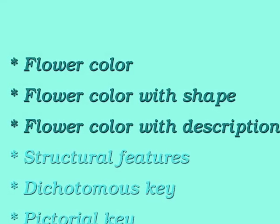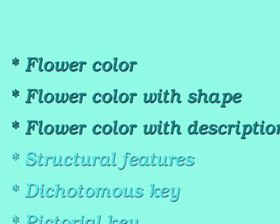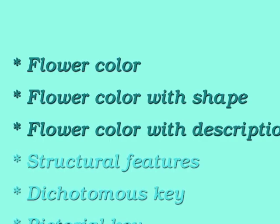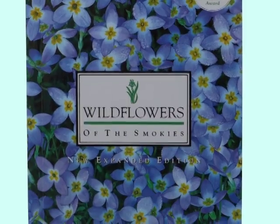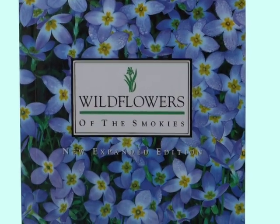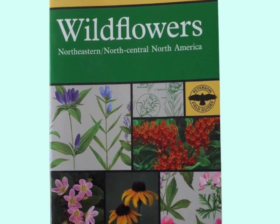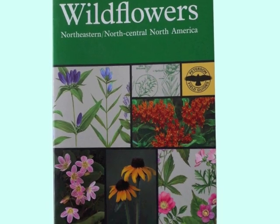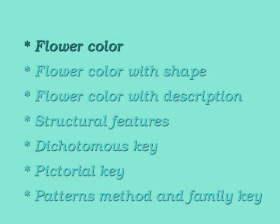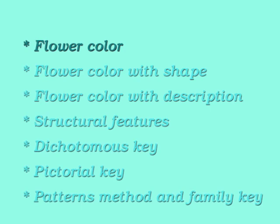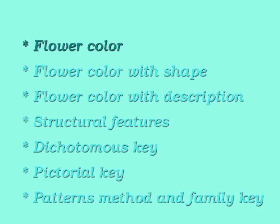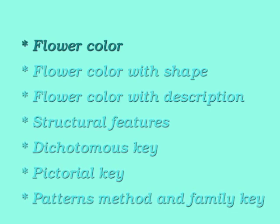This first video focuses on keys based on a wildflower's color. We'll look at three plants and use three different field guides to identify them. Let's start with the simplest key, which is the one you're probably most likely to already be familiar with: identifying a plant by the color of its flower.